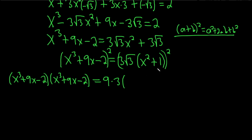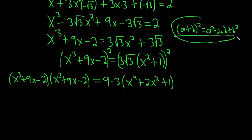Using the formula to square (x squared + 1): square the first to get x to the fourth, multiply x squared and 1 and double it to get 2x squared, and square the last to get 1. That gives x to the fourth plus 2x squared plus 1. Now let's distribute the left side.